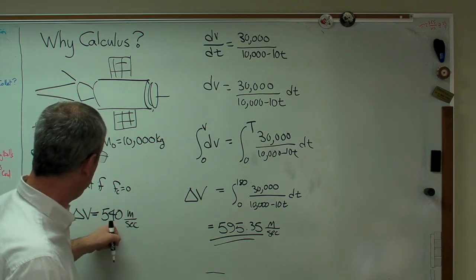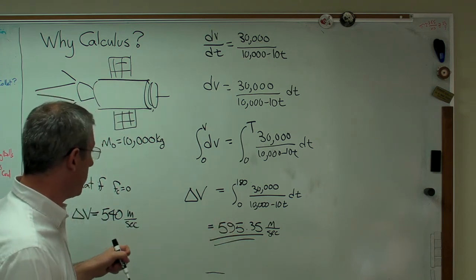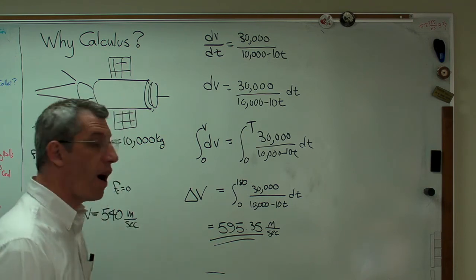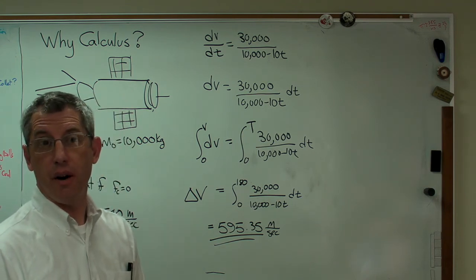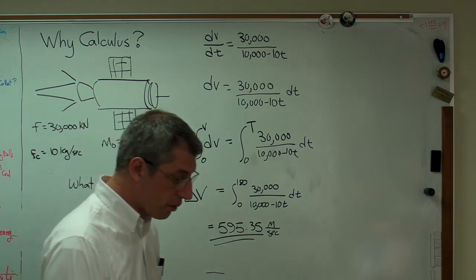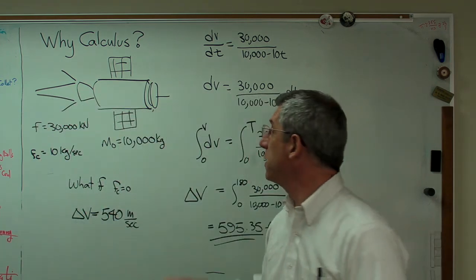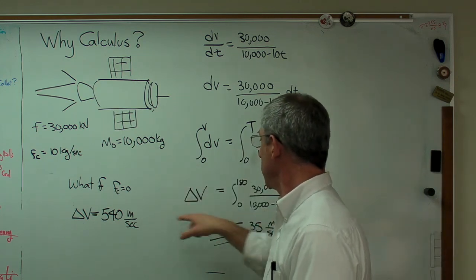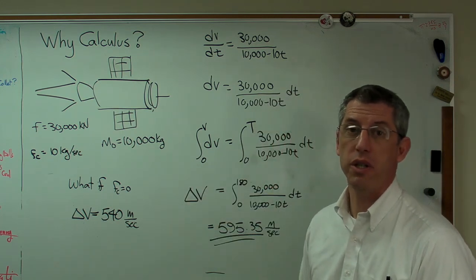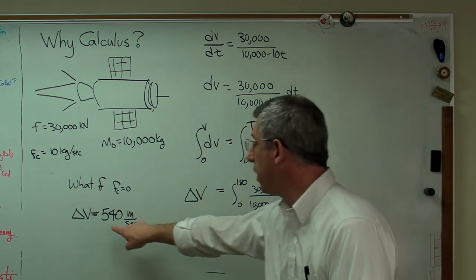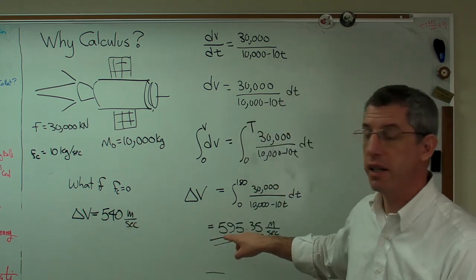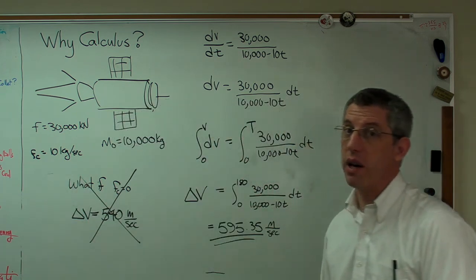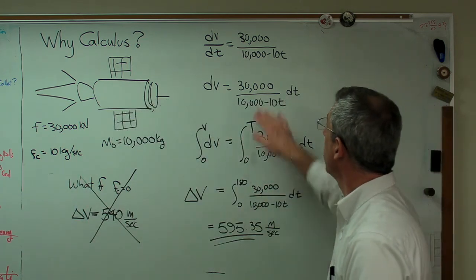That's a problem. This is not the right answer. You're going to miss by a little over 55 meters per second. Now 55 meters per second may not sound like a lot, but if this space probe is going from here to Mars, the difference between those two velocities may be huge. You may miss the planet by a lot. You can't be off that far and expect it to work. So you don't get the right answer that way.